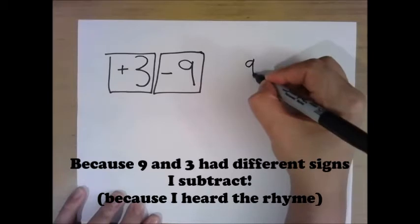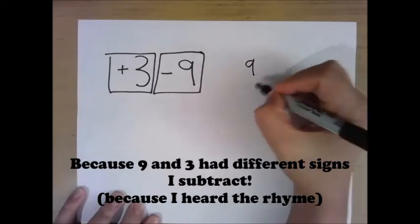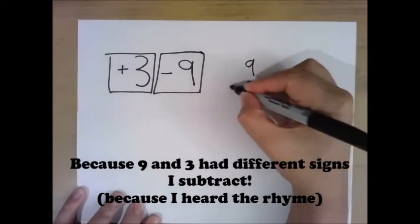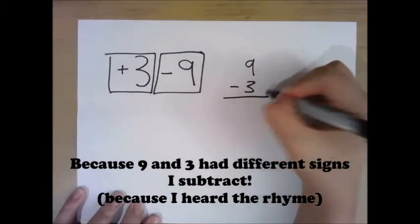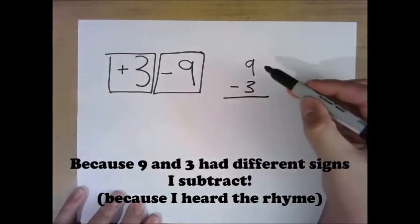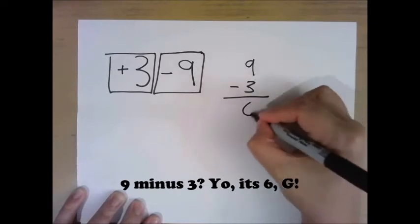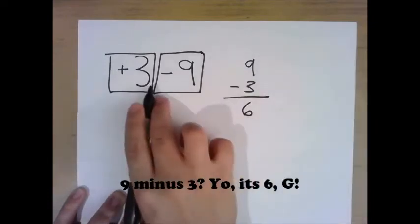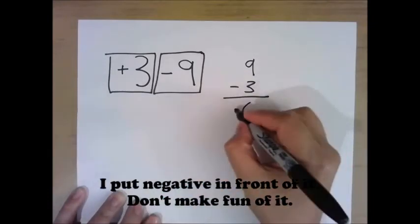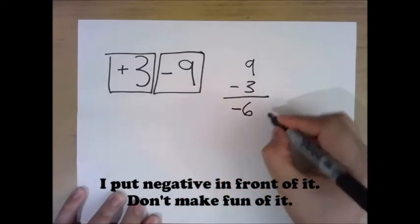Cause 9 and 3 have different signs, subtract — you know, because I heard the rhyme. I have 9 minus 3, yo it's 6. I put that negative in front of it.